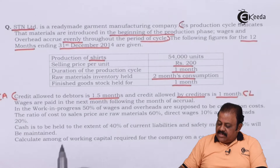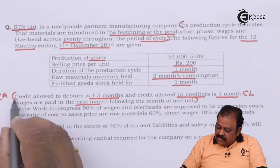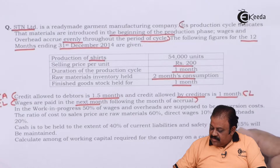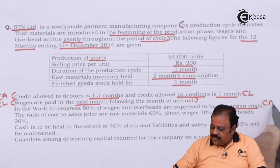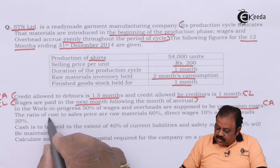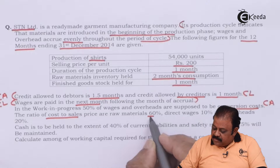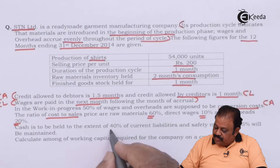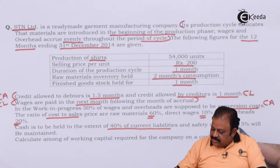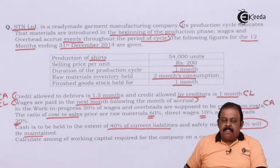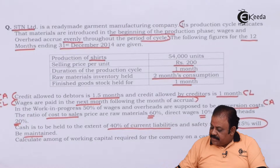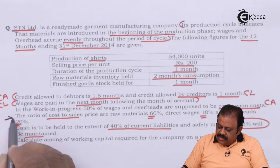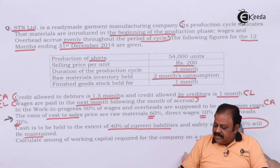Credit allowed to debtors: 1.5 months. Credit allowed by creditors: one month — this is information for current liability. Wages are paid in the next month following the month of accrual — this is again information of current liability. In work in progress, 50% of wages and overheads are supposed to be conversion cost. The ratio of cost to sales price: raw material 60%, direct wages 10%, overheads 20%. Cash is to be held to the extent of 40% of current liabilities, and a safety margin of 15% will be maintained. Calculate working capital required on cash cost basis.